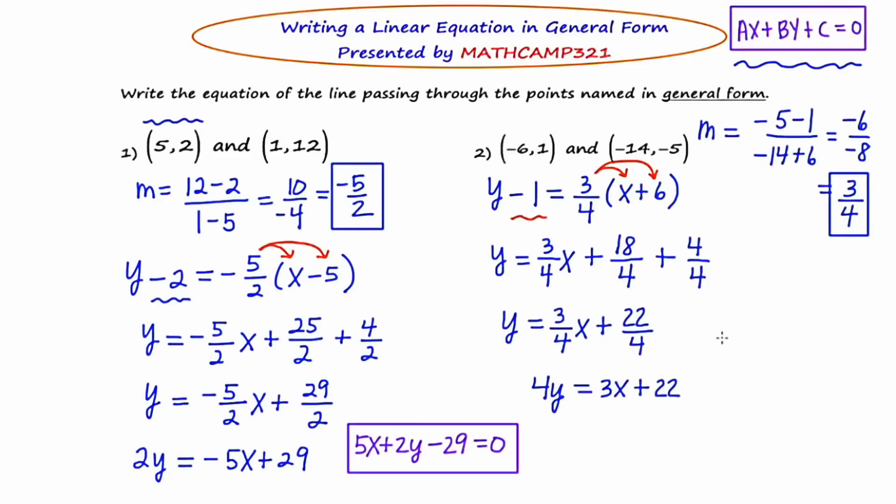I'm really close to having general form. I just now need to move everything to one side. So I'm going to move the 4Y over to the right hand side so that all of my terms will be on one side and zero will be on the other. This will leave me with a final answer of 3X minus 4Y plus 22 equals zero.